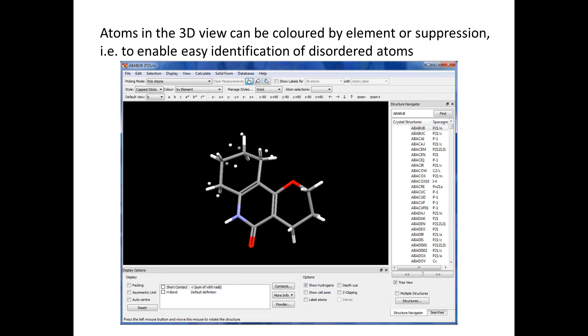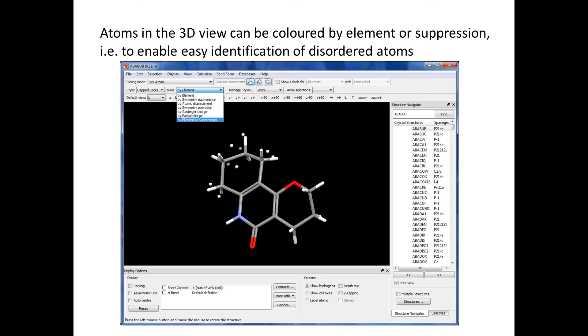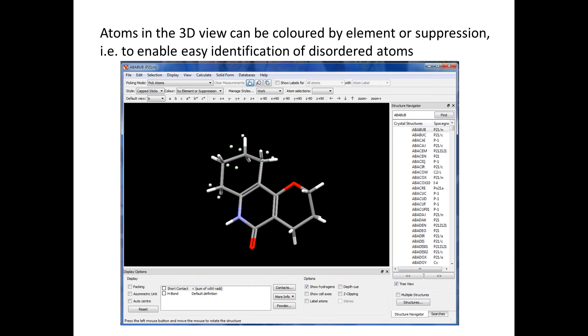Another improvement is that now atoms in the 3D view can be colored by element or suppression. So when the main menu color option is set to element or suppression, all the suppressed atoms in the 3D view are represented in the same unknown color so that they can be easily distinguished from other non-suppressed atoms. All other atoms will remain in their usual default element colors. In this particular instance, these atoms are colored as light green to show that these are the suppressed disordered atoms.